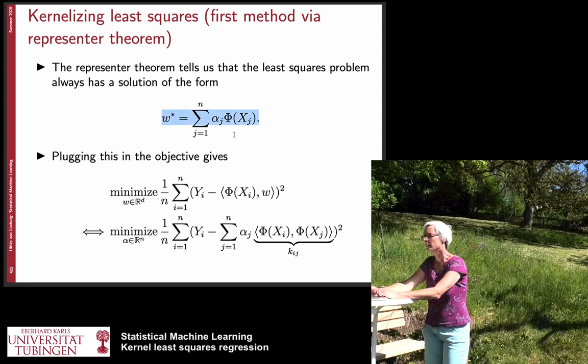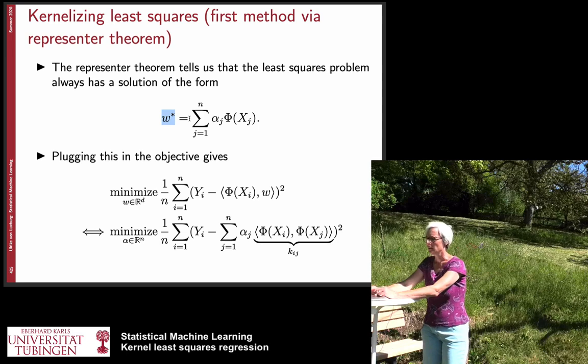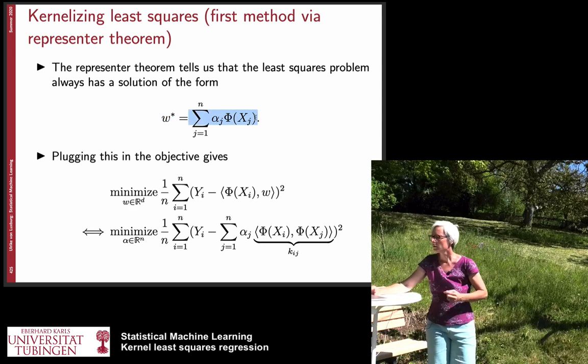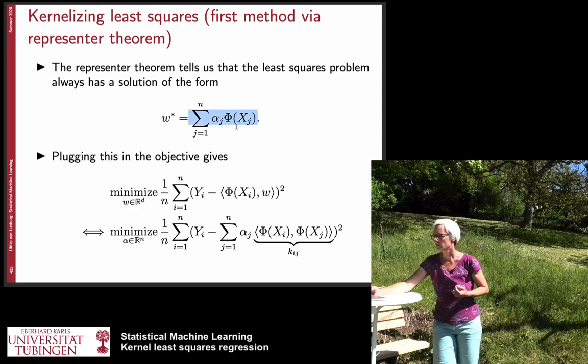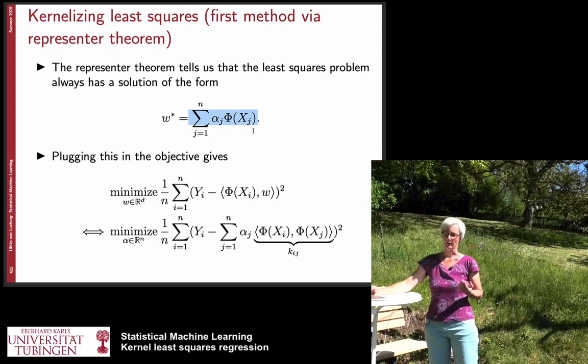Or if we write it in, we are not yet in kernels, we are still in the feature space setting, we know that we can write the solution of a problem omega star as a linear combination of points in our input space. And the input space is in this case the feature space phi of xj.